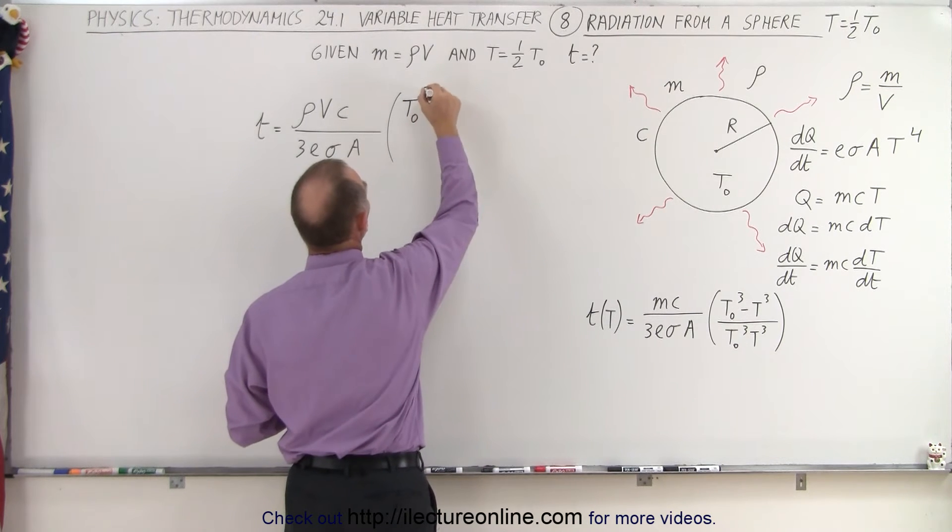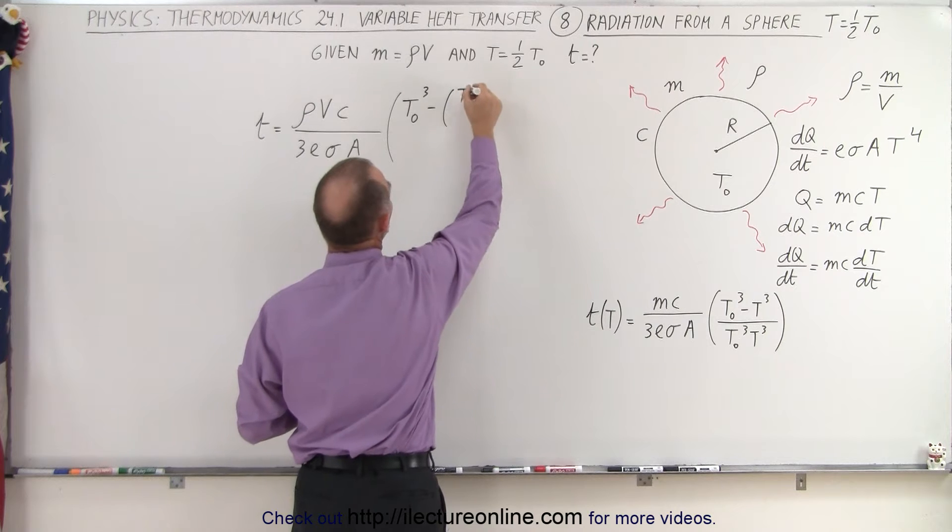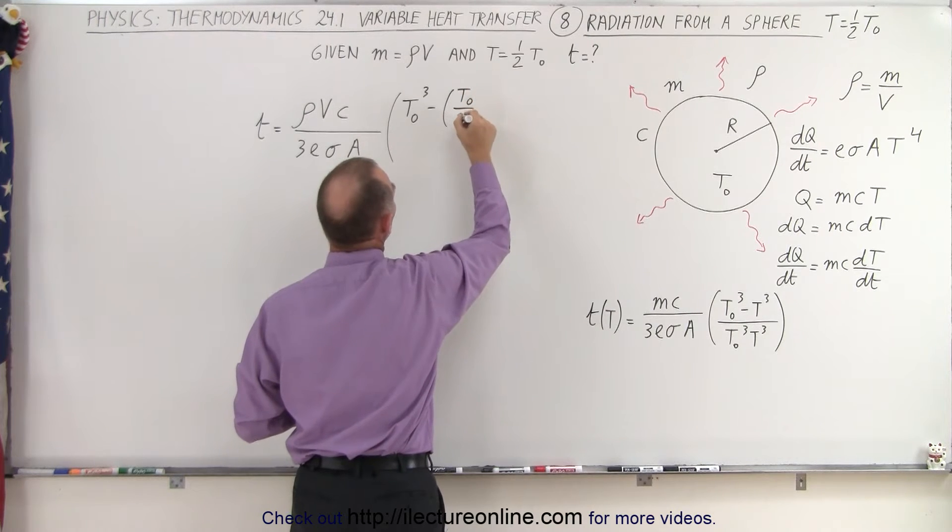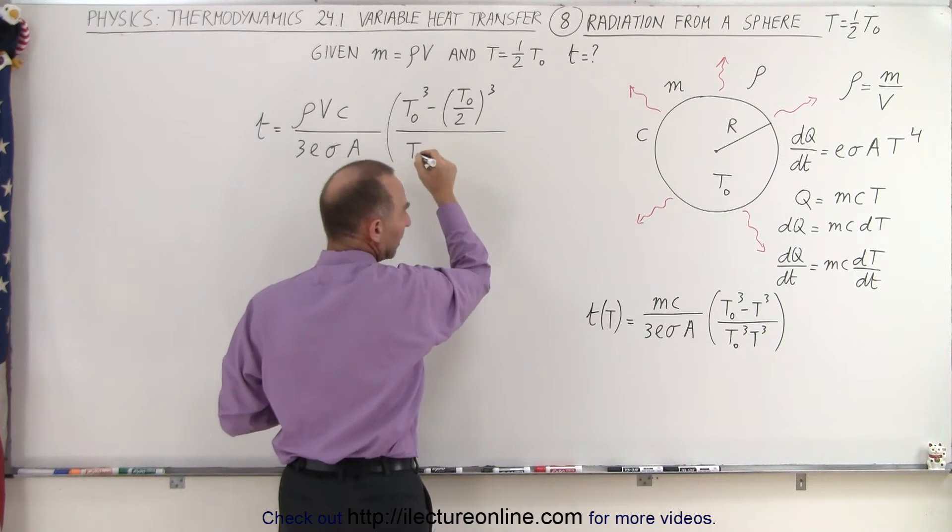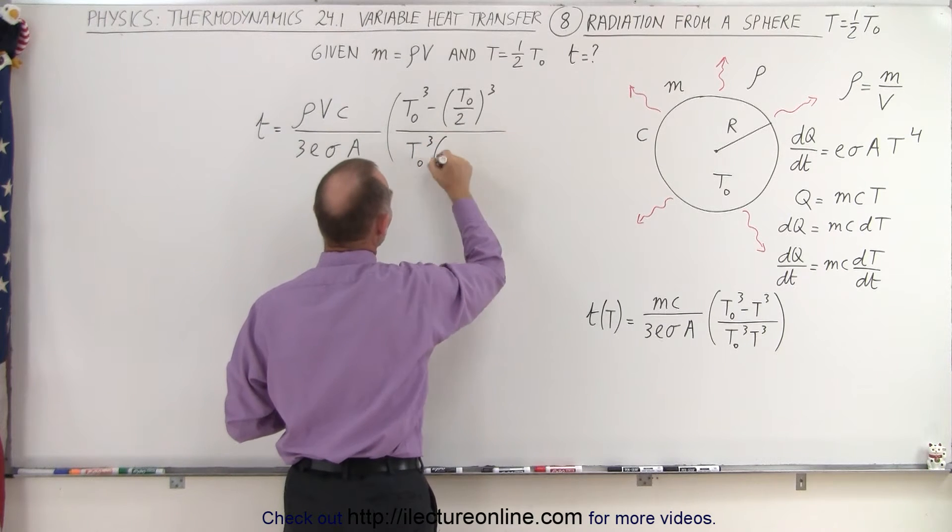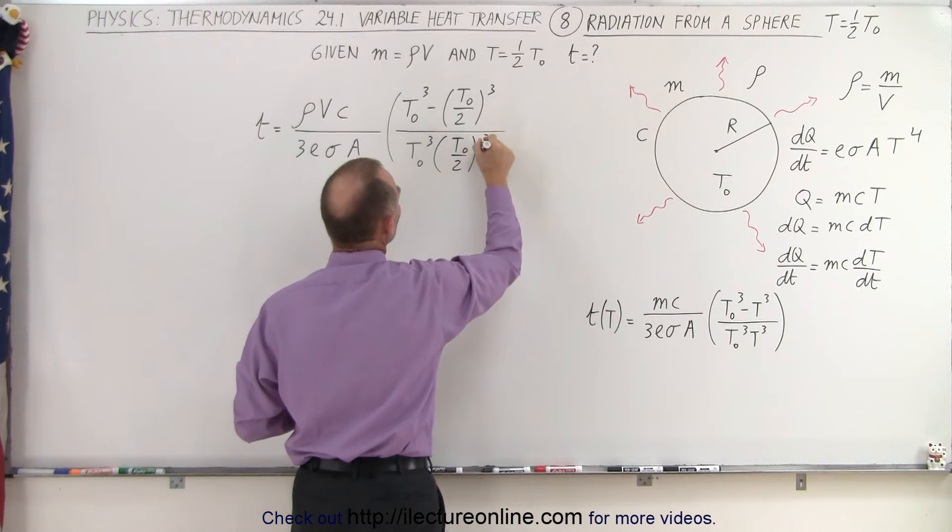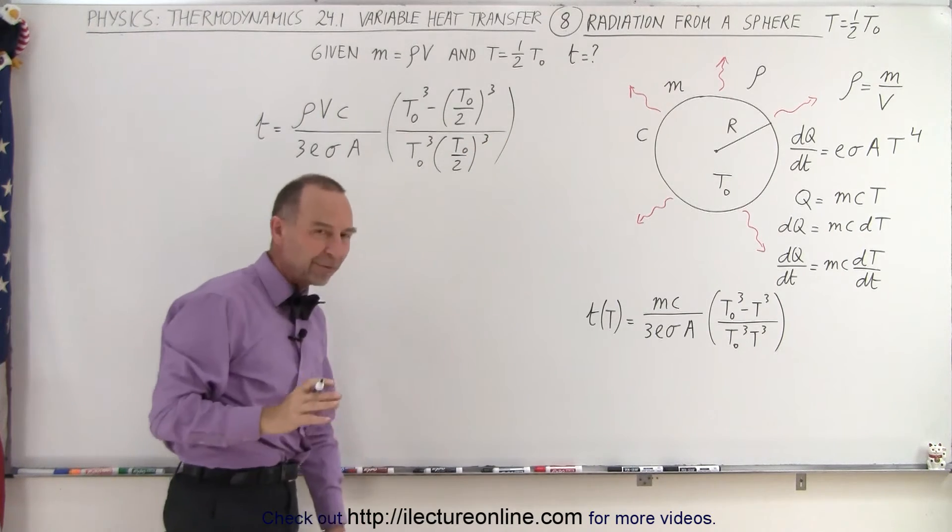So this becomes T sub-naught cubed minus the quantity T sub-naught over 2 quantity cubed, divided by T sub-naught cubed times T sub-naught divided by 2 quantity cubed. So let's see how that simplifies.